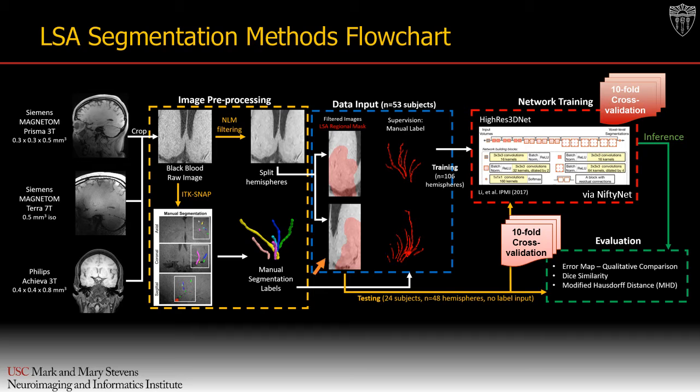To improve the specificity of the training, an LSA regional mask was created by dilating all the manual segmentation labels and taking the common covered region. The dataset was divided into a training set with 53 subjects, or 106 volumes, from both 3T and 7T scanners, and a test set with 24 subjects, or 48 volumes, from a 3T scanner.